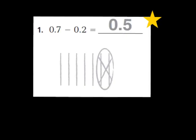Now let's take a look at question number 1. As you can see, question number 1 has already been completed for us, but it's a good model for how to solve a decimal subtraction problem by drawing a quick picture. For question 1, they give us the problem 7 tenths minus 2 tenths, and our job is to draw a quick picture to solve that decimal subtraction problem. Our first step is to model that first number, which is 7 tenths.